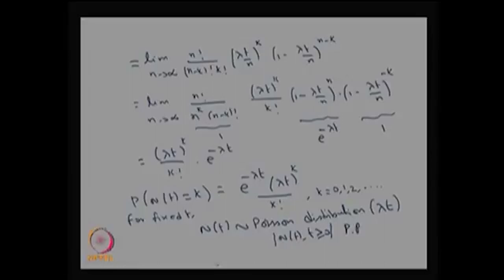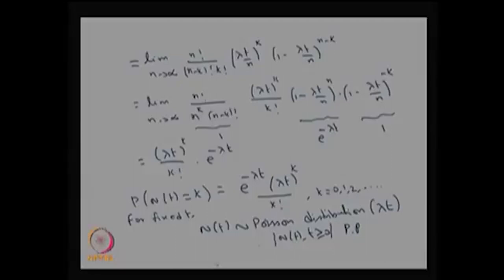This is a very important continuous-time, discrete-state stochastic process — a Poisson process. It is also a very important continuous-time arrival process. The way we count N(t) is the number of arrivals over the interval 0 to t, or the number of occurrences of the event up to time t. The Poisson process is an example of a counting process, so N(t) is also called a counting process.